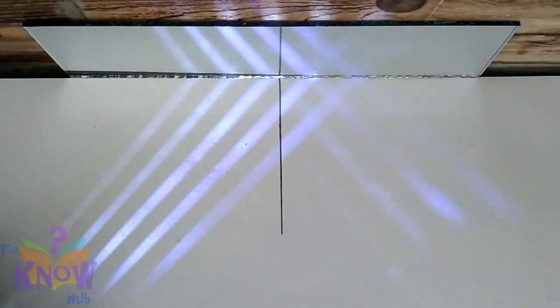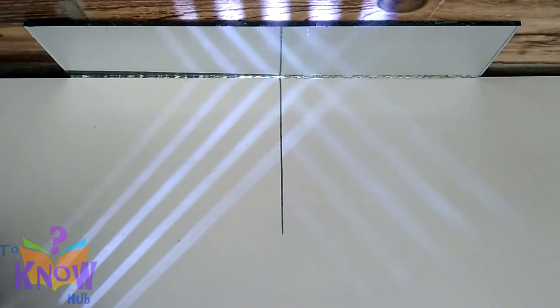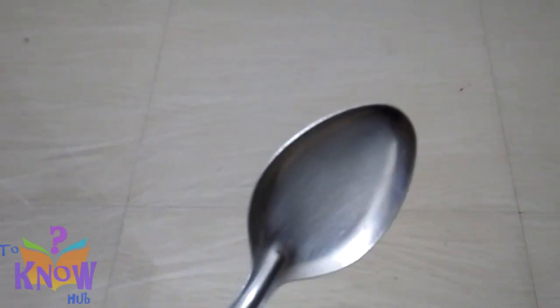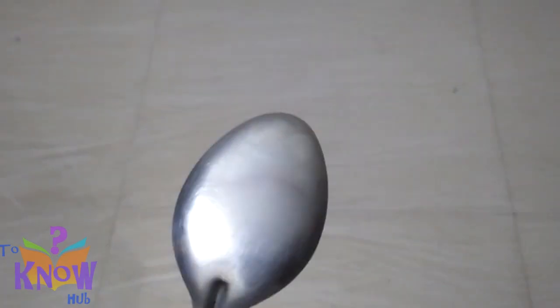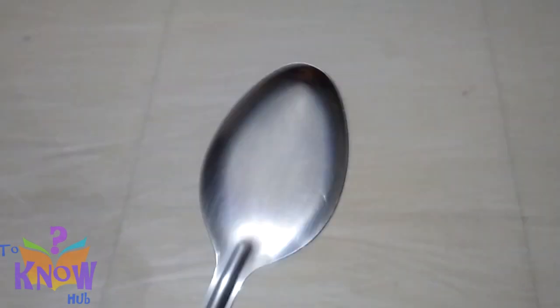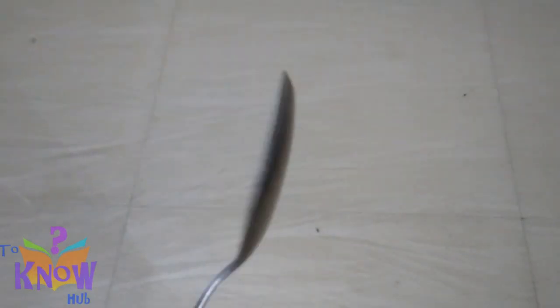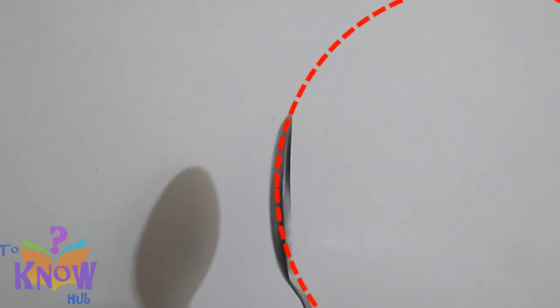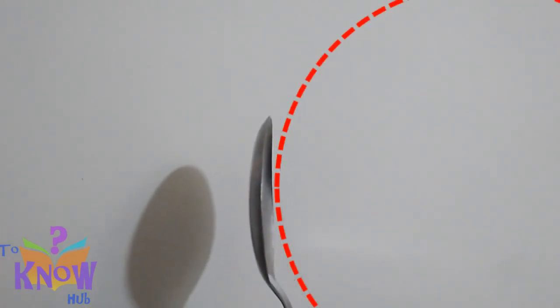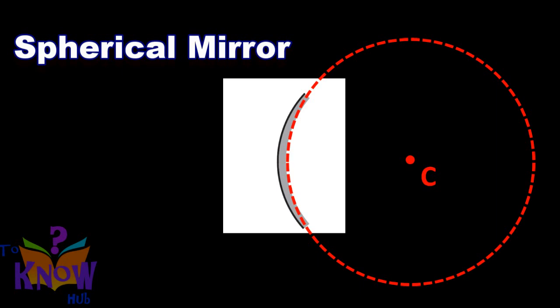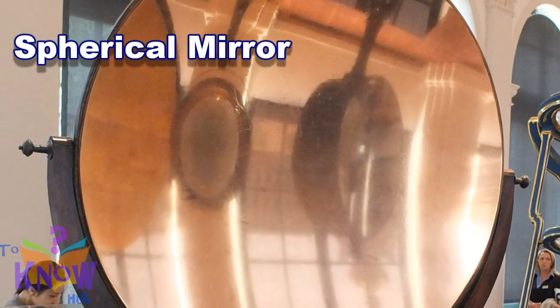In our previous episode we learned about reflection and how plane mirrors work. Now this spoon, we can see our face in it, we can see reflection of other objects. It's like a mirror but it is not plane, it is spherical. It looks like a part of a sphere. This kind of mirror is called spherical mirror.